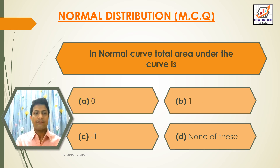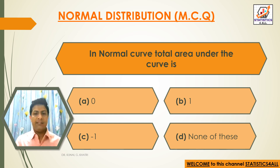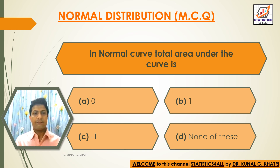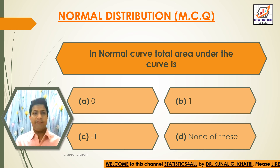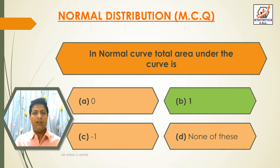Next question: in a normal curve, the total area under the curve is — Option A: 0. Option B: 1. Option C: minus 1. Option D: none of these. The answer is Option B — 1. In a normal curve, the total area under the curve is 1.